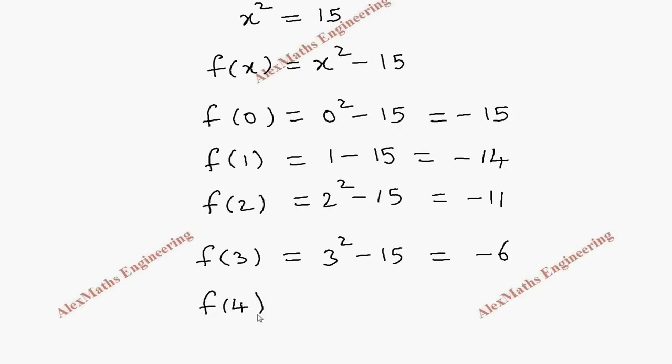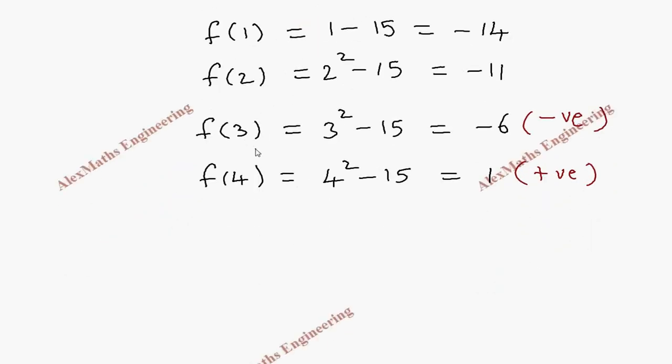Let's take 4. It means 4 square minus 15, which is 1. So from here, we notice this is a negative and this is negative value. This is a positive value. So the f of x changes its sign between 3 and 4. So we can say the root lies between 3 and 4.